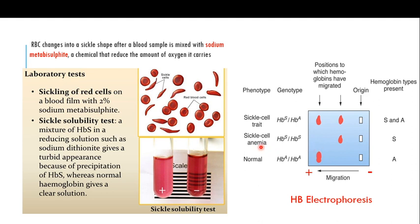In a sickle cell anemia patient, glutamic acid is replaced by valine. Valine does not carry as much negative charge as glutamic acid, so the beta-globin chain with the mutation does not move as far toward the positive charge, and you get a band at a different, closer position. When discussing sickle cell trait — the carriers — they have one normal copy and one abnormal copy of the beta-globin gene, so you expect two bands.